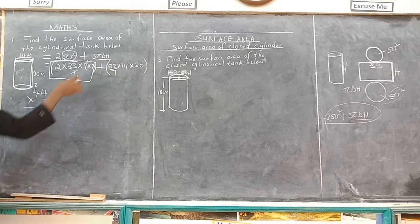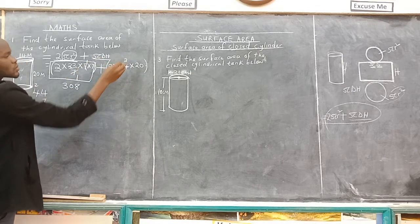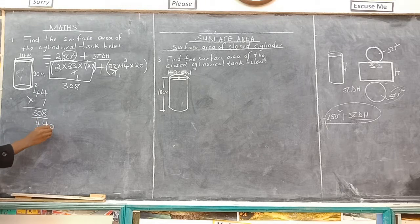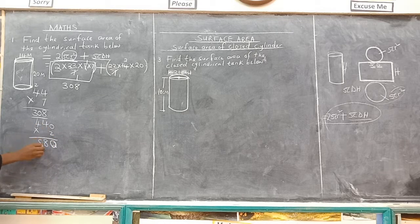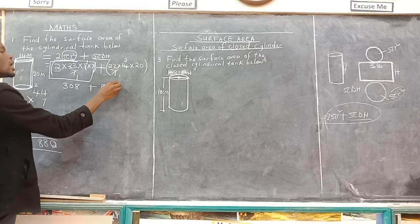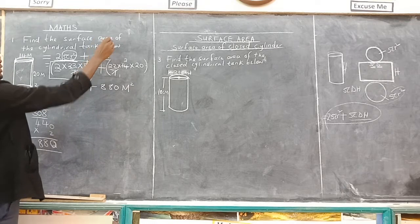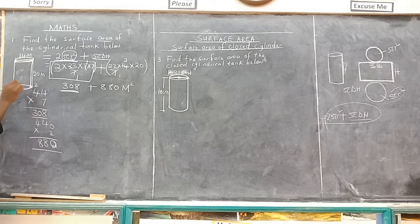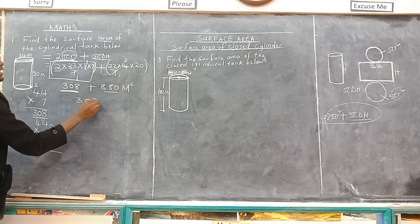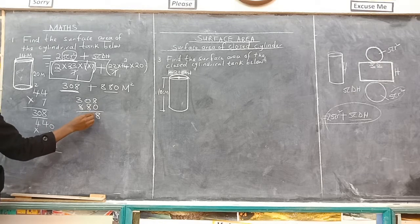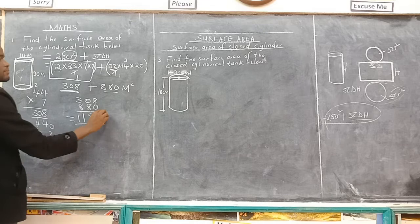Now go to the next part of the formula — the curved surface area. Cancel 7 with 7; 2 times 22 gives 44; 44 times 20 gives 880 metres squared. So the total surface area is 308 plus 880. 8 plus 0 is 8, 0 plus 8 is 8, 3 plus 8 gives 11. So the answer is 1188 metres squared.